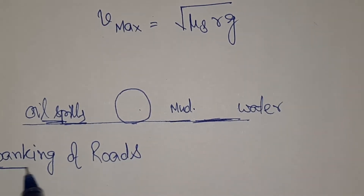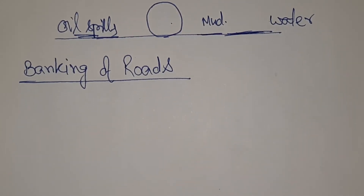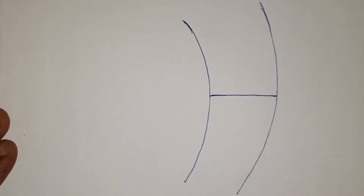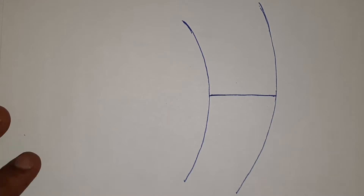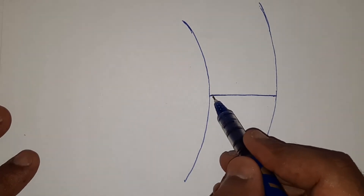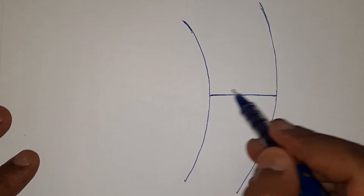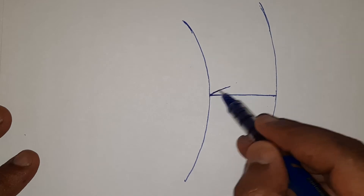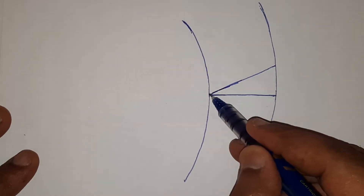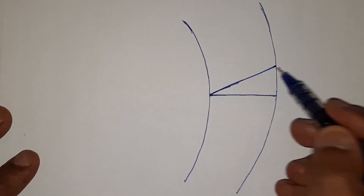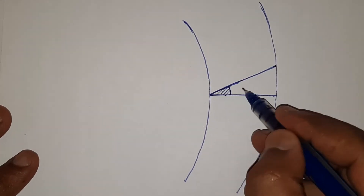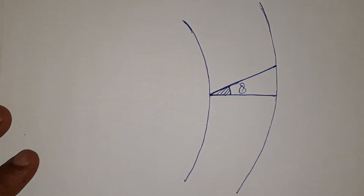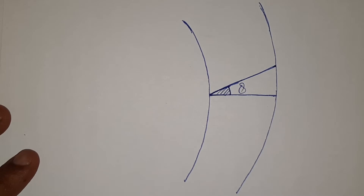What is done in banking of roads? Suppose we have a curved flat road. The center-side part is kept lower and the away-side part has its road level raised, in such a way that the surface of the road makes an angle theta with horizontal. This helps us to increase the maximum value of velocity for the safe turn in a very reliable manner.